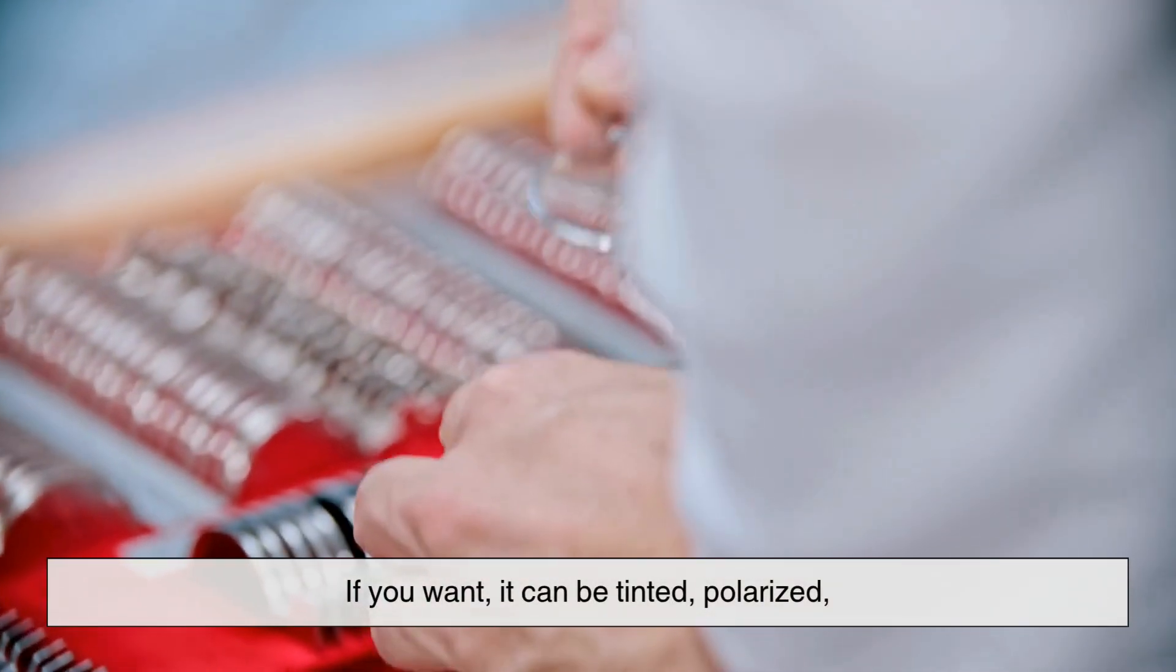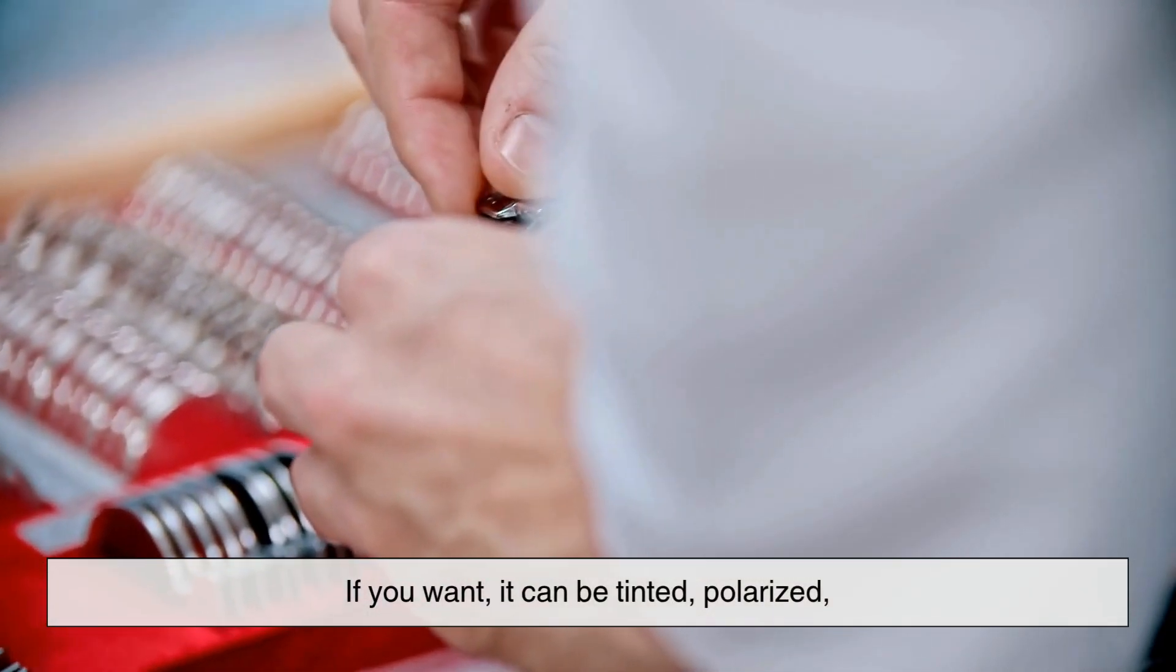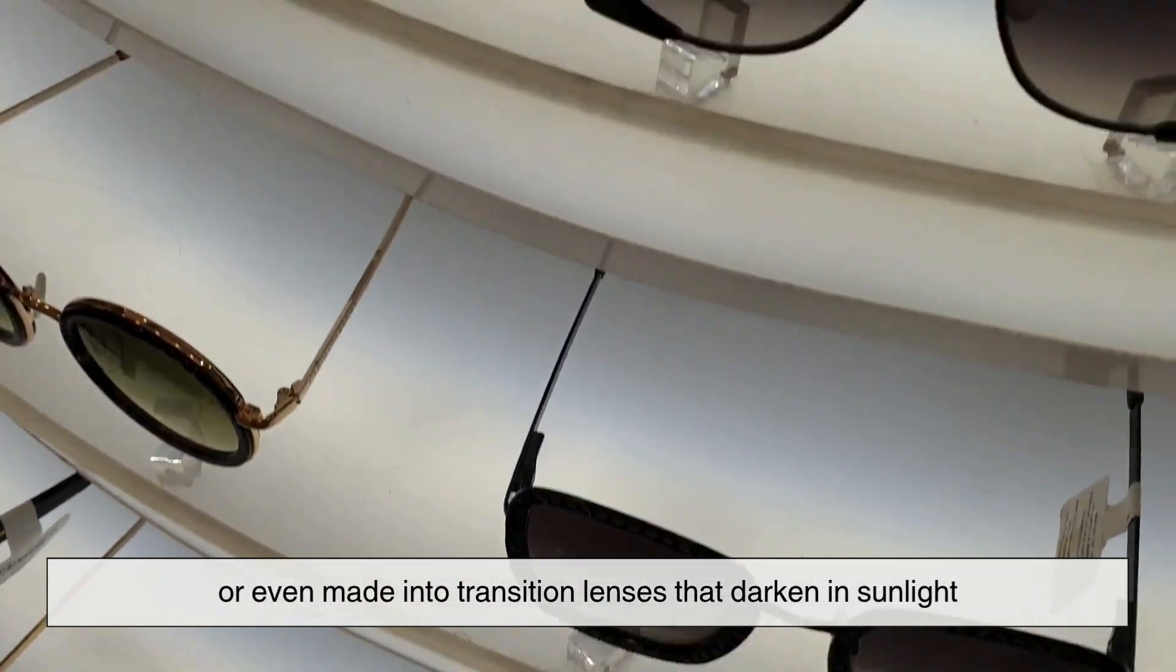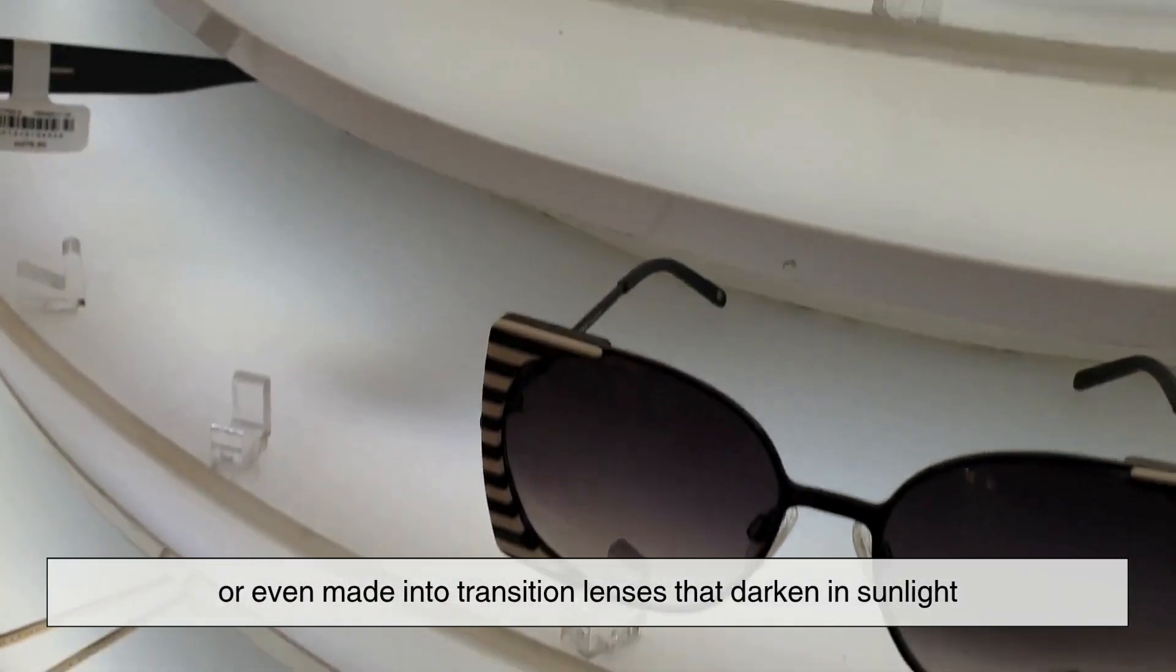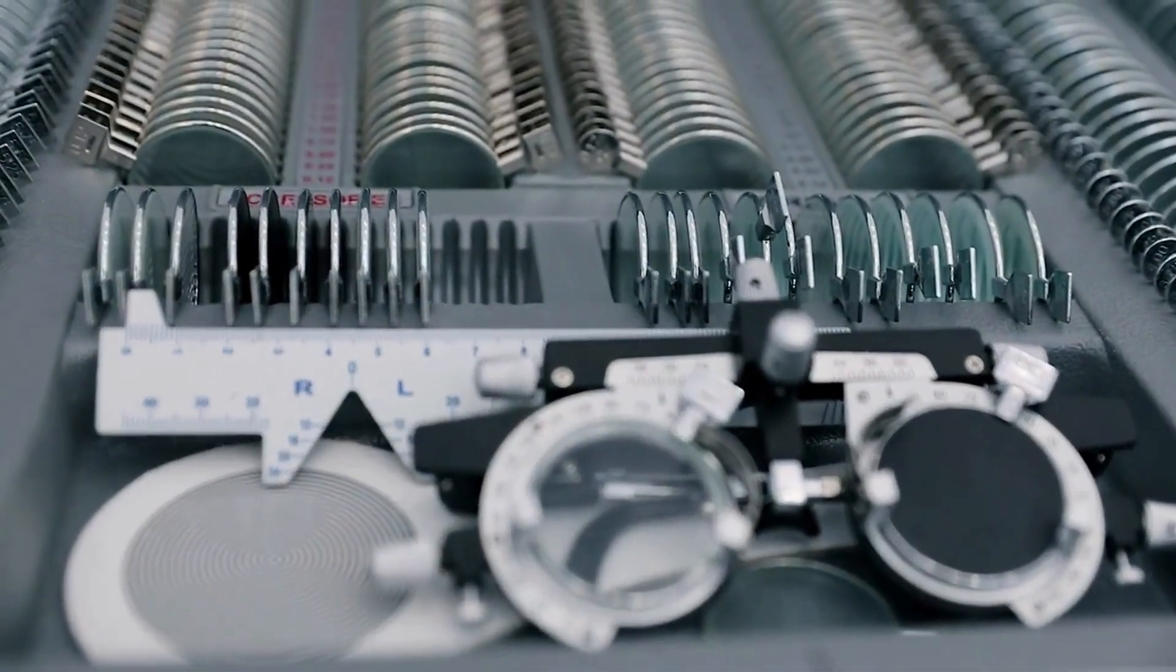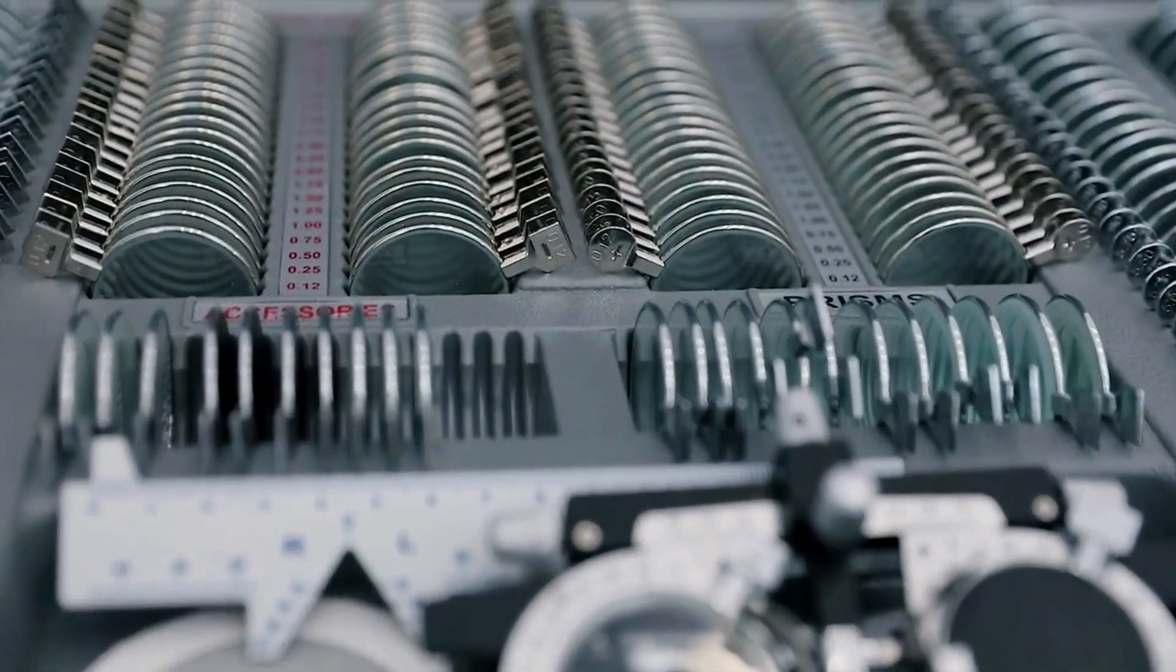If you want, it can be tinted, polarized, or even made into transition lenses that darken in sunlight. It's all about making the lens fit your lifestyle and your personal style.